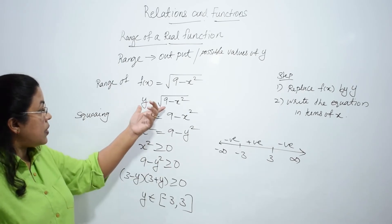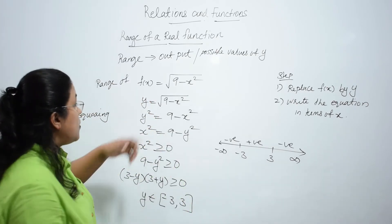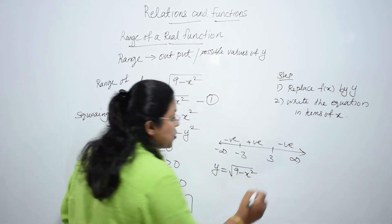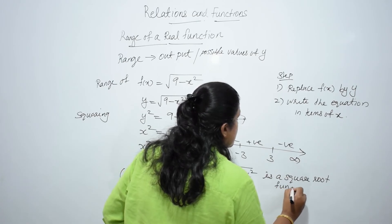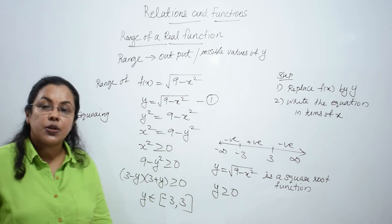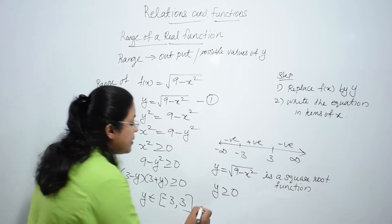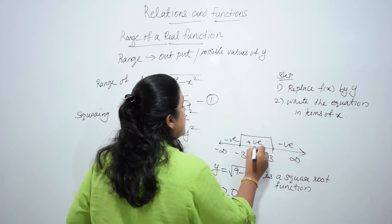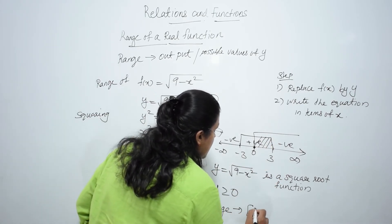Because y = √(9 - x²) is a square root function. The value of a square root function is always greater than or equal to 0. So y ≥ 0. Combining y ∈ [-3, 3] and y ≥ 0, we get the range as the common part: 0 to 3. So the range of the function is 0 to 3.